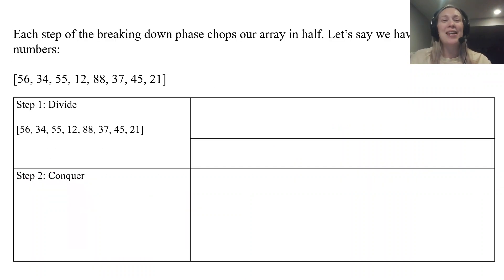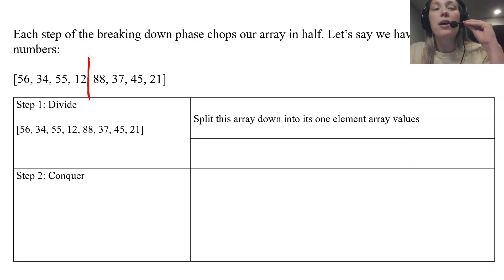I'm going to use this example: an array of eight numbers. You can see that it's unsorted and we want to sort. The first step is to divide, which splits this array down into its one element array values. The way this recursive algorithm works is it takes a complete array and divides it in half.